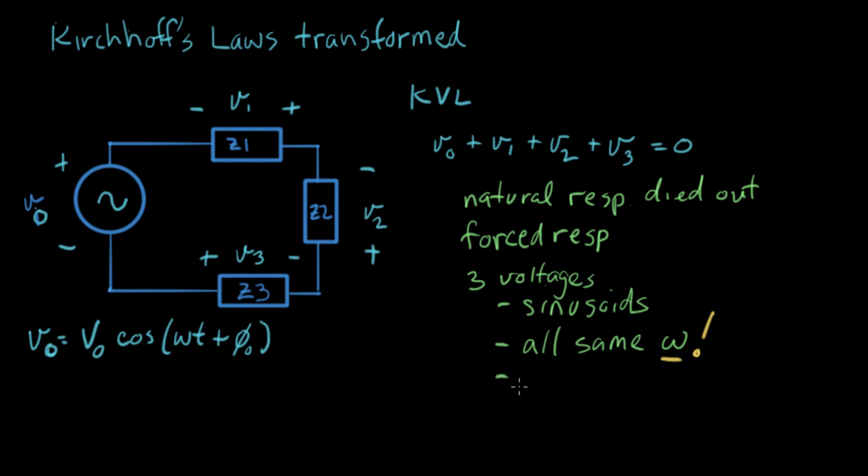Now some other things we know: there's gonna be phase shifts involved. Remember when we do impedance, we multiply by j and rotate things by 90 degrees. So we're gonna have different φ for each one. And the amplitudes of our sinusoids are gonna be different. The amplitude of V₁ could be different than V₂.